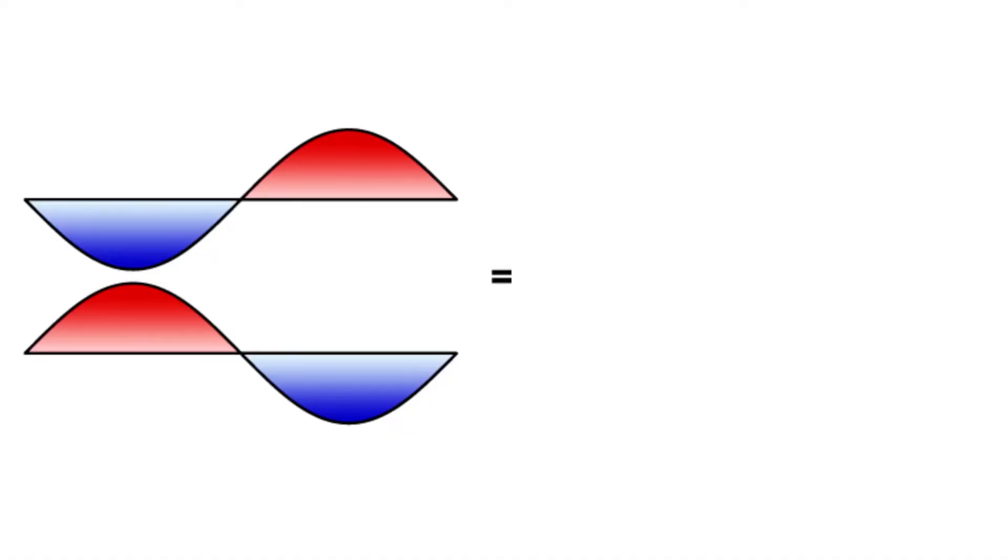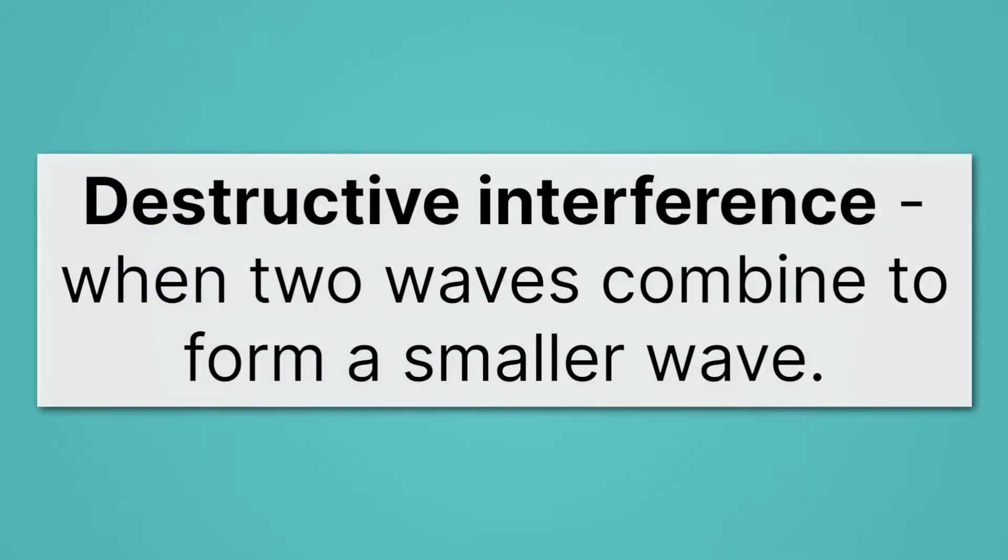And that's the opposite of what we see here. Now we have the blue overlapping with the red and the red overlapping with the blue. So in other words, the peaks and troughs are overlapping, and so they cancel out. This is destructive interference.